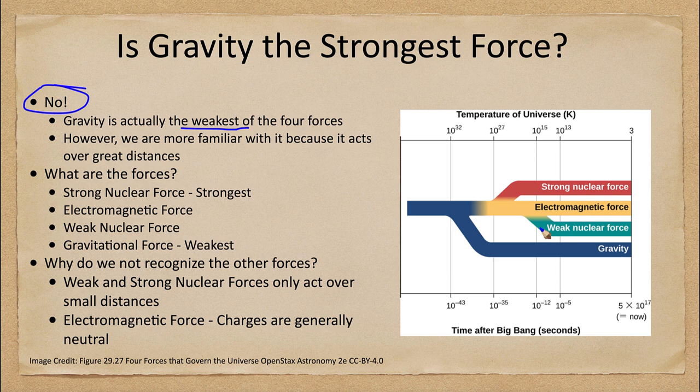We can see those forces in our diagram. Why do we tend to think of gravity as the strongest? It's the one we are most familiar with, because it acts over great distances. Two of these forces — the strong nuclear force and the weak nuclear force — do not act over large distances; they only act over atomic distances. The electromagnetic force does act over larger distances, but it is so much stronger than gravity that things tend to be neutral.